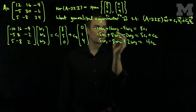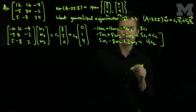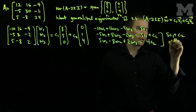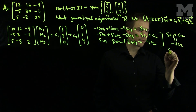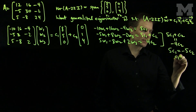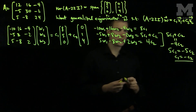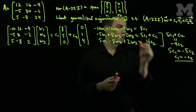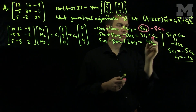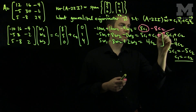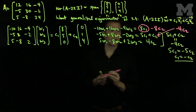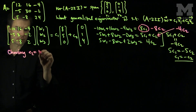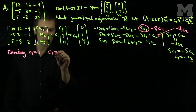Looking at the bottom two equations, they are opposites of each other, so it must be that 5C1 + C2 = -4C2, which gives 5C1 = -5C2, and therefore C1 = -C2. With C1 = -C2, we can update the equations: the term 8C1 becomes -8C2. Choosing C2 = 1 gives C1 = -1.